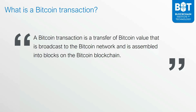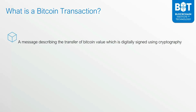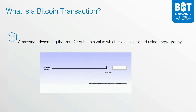If you really look at a Bitcoin transaction, it is simply a message describing the transfer of Bitcoin value, which is digitally signed using cryptography. In many ways it behaves very much like a check that specifies who has bitcoins and where those bitcoins are going to be going. These Bitcoin transactions are digitally signed by the owner's wallet using their private key.